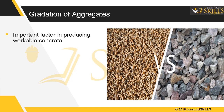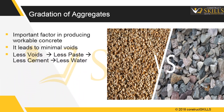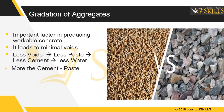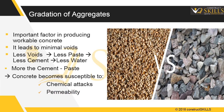If the concrete contains all fractions of aggregates, such a mix will have minimal voids. A mix with less voids will require minimum cement paste. Minimal paste means less cement and less water. An increase in voids ratio leads to more consumption of cement paste, and hence the concrete becomes vulnerable to deterioration due to chemical attacks and becomes more permeable.